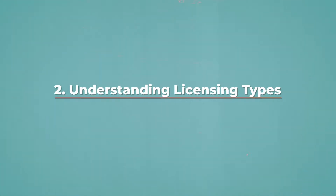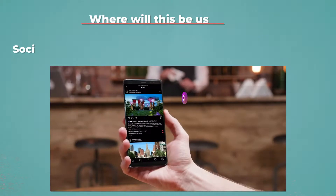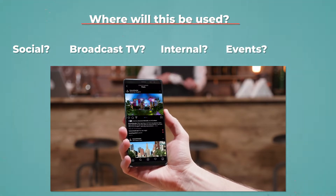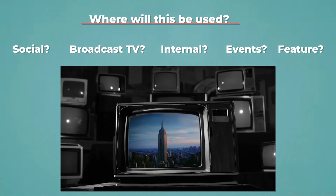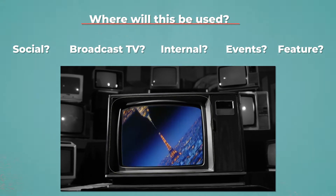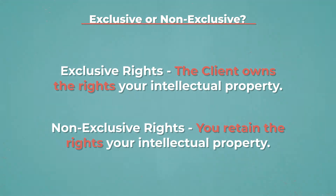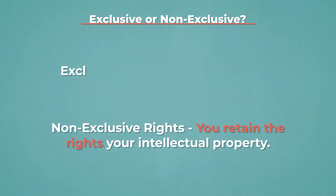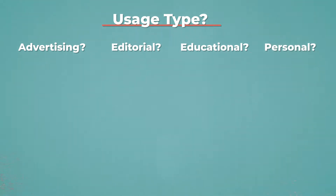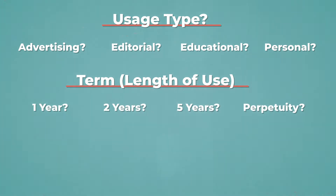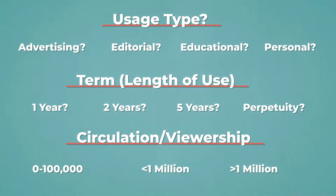Just like selling stills, we need to know how and where our video will be displayed. Will it be on social sites like Instagram, Facebook, or TikTok? Will it be broadcast on TV, used for internal purposes, at events, or on a film or TV show like House of Cards or Marvelous Mrs. Maisel? Or do they want every single option? Do they want exclusive rights, meaning they own all the footage and you can't sell it again? Or are they okay with you retaining ownership? Then there's type of usage — advertising, editorial, educational, or personal — the length of use, and how many eyeballs will see it. All of these factor into the final price.